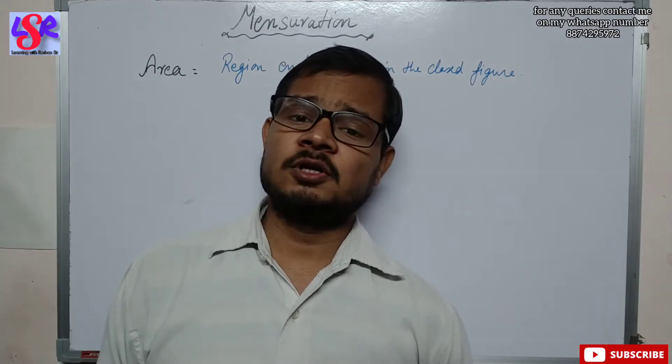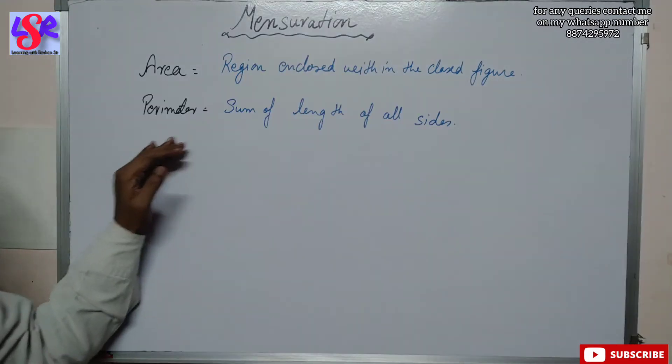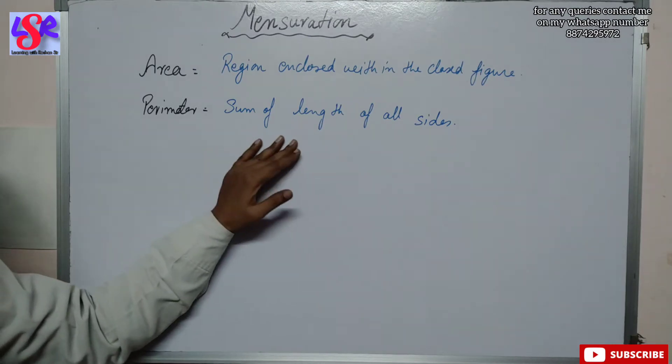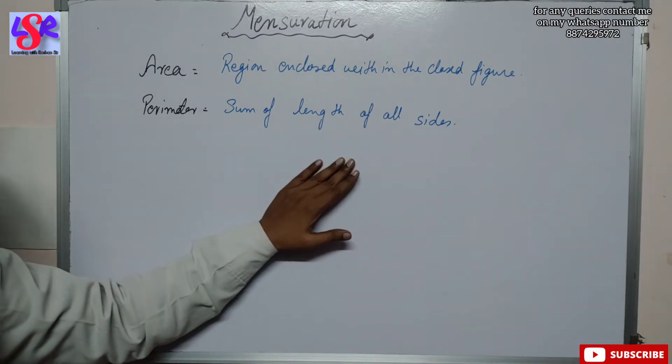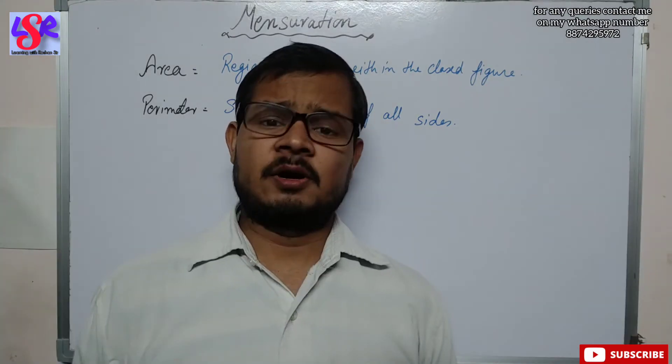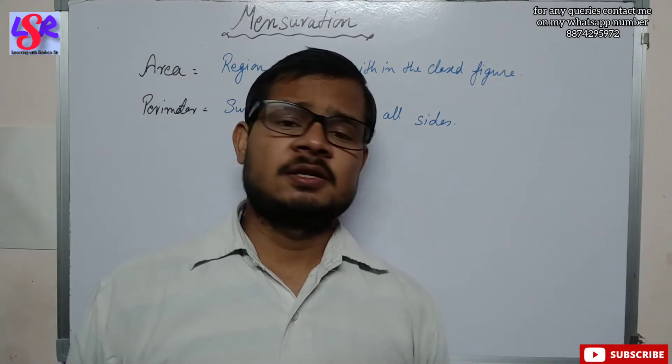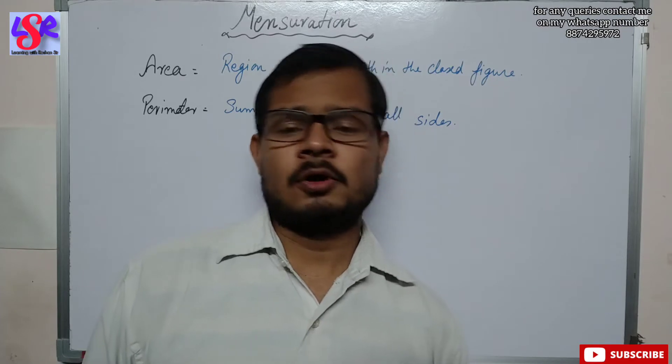If we want the perimeter of the figure, then perimeter is the sum of the lengths of all the sides. For example, if we are having a quadrilateral then we are going to find the sum of all four sides.